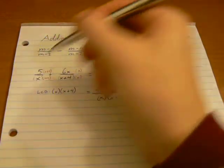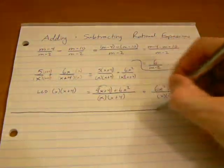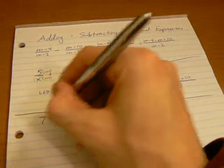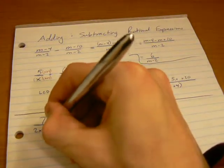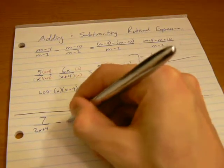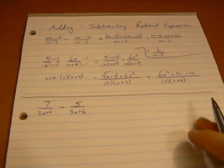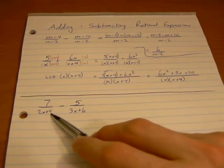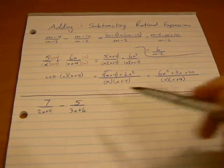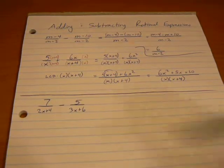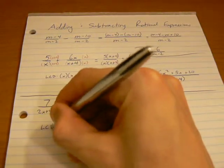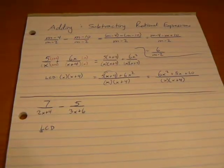Let's try one more. So here we've got 7 over 2x plus 4 minus 5 over 3x plus 6. And we always want to find our lowest common denominator here. Lowest being the keyword.